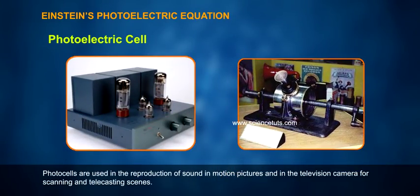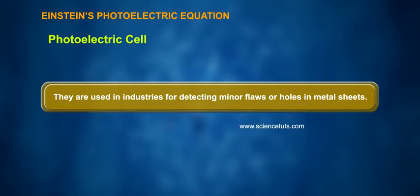Photocells are used in the reproduction of sound in motion pictures and in the television camera for scanning and telecasting scenes. They are used in industries for detecting minor flaws or holes in metal sheets.